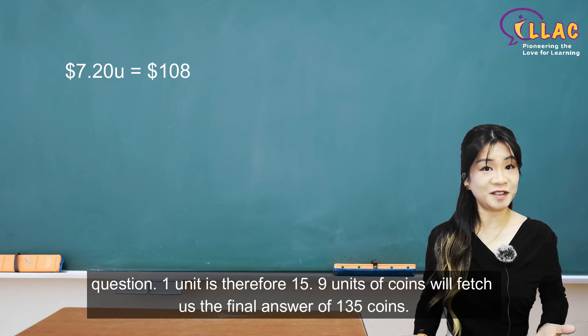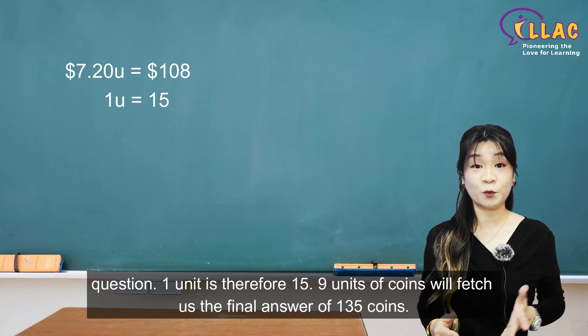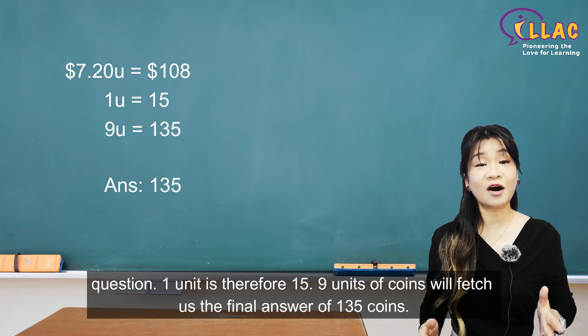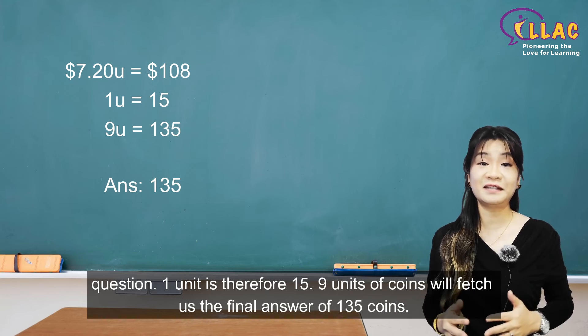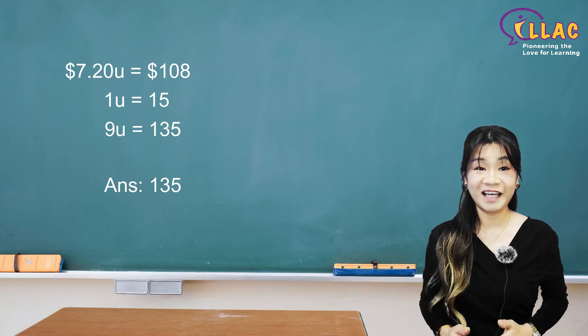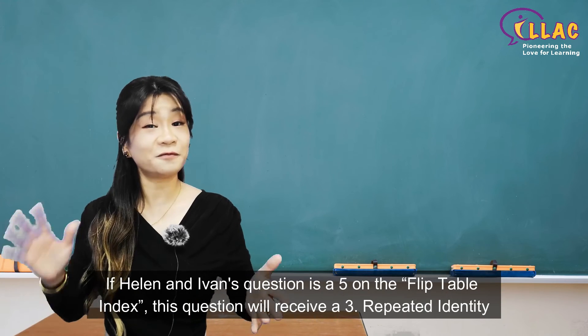1 unit is therefore 15. 9 units of coins will give us the final answer of 135 coins.